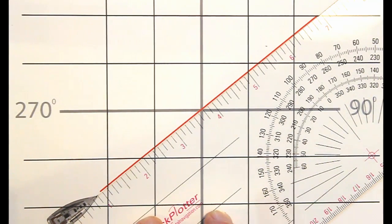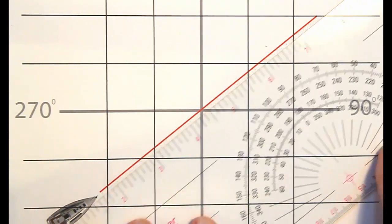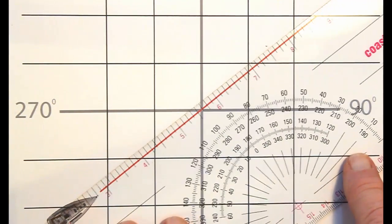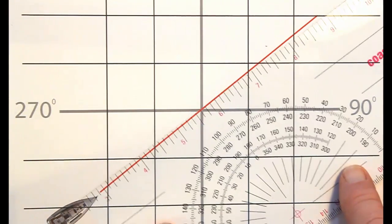That's why you have to do that thinking ahead of time. Now, alternatively, you could have slid this down and put it on the line of longitude.